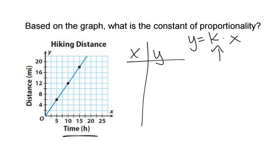Because this is a proportional graph, we know (0, 0) is the first entry in the table. Obviously, zero times anything equals zero, so that entry doesn't really help us find the constant of proportionality. The next point is (5, 6) — it's at x equals five, and lines up halfway between four and eight on the y-axis, which is six. The next point is (10, 12), and the next is (15, 18) — halfway between sixteen and twenty.